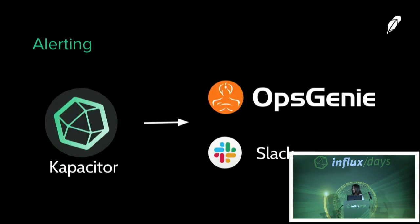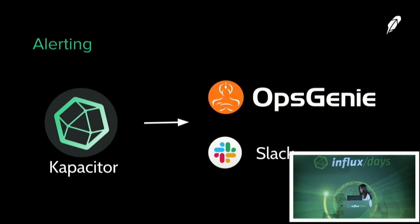After identifying the anomaly, we want to alert downstream. We leverage Kapacitor, which I'm sure many here are familiar with. It's an alerting engine that allows you to define rules based on TICKscript and configure which downstream services receive the alert. We use OpsGenie for very serious alerts and Slack for status updates.